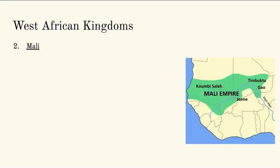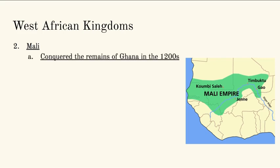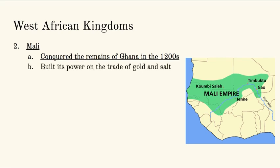We then get to Mali. As you saw in your map activity, it's a little bit below Ghana but still a similar area. They basically conquer what is the remains of the Ghana empire in the 1200s. History is a bunch of empires layered on top of each other — Ghana was falling apart, every empire has its rise and fall, and then Mali comes in and conquers the remains and builds their empire on top of it. Like Ghana, they're going to build their power based on that trade of salt and gold. I cannot emphasize enough how important gold and salt are to medieval Africa.